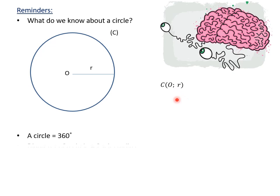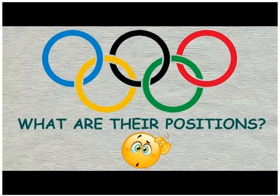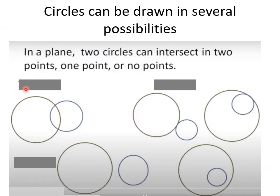We know that a circle measures 360 degrees and the diameter of a circle is two times its radius. Now, regarding the relative positions of circles: there are five possible cases of how we can draw two circles. We will study each one, but first let us observe in how many points these circles intersect.